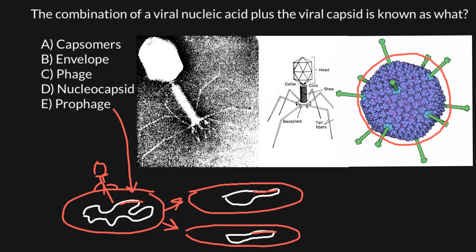As you see, the correct answer is Answer D. The combination of viral nucleic acid and viral capsid we call the nucleocapsid. You see the capsid here, and if we add DNA or RNA inside, we get the nucleocapsid. This is the capsid associated with DNA — or, as I said, it can be RNA, double-stranded or single-stranded. Now we call this the nucleocapsid.